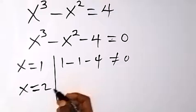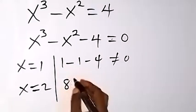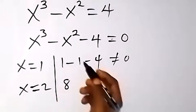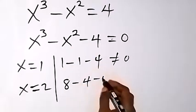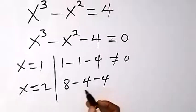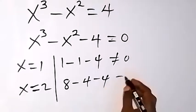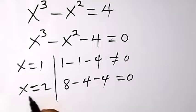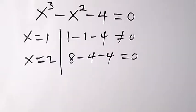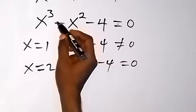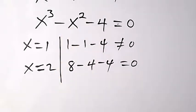Now let's take x equals 2 to check whether x equals 2 is a root. 2 raised to power 3 is 8, then minus 2 raised to power 2 is 4, then minus 4. We have 8 minus 4 that's 4, and 4 minus 4 equals 0. Since this equals 0, it means x equals 2 is a root of that cubic polynomial.